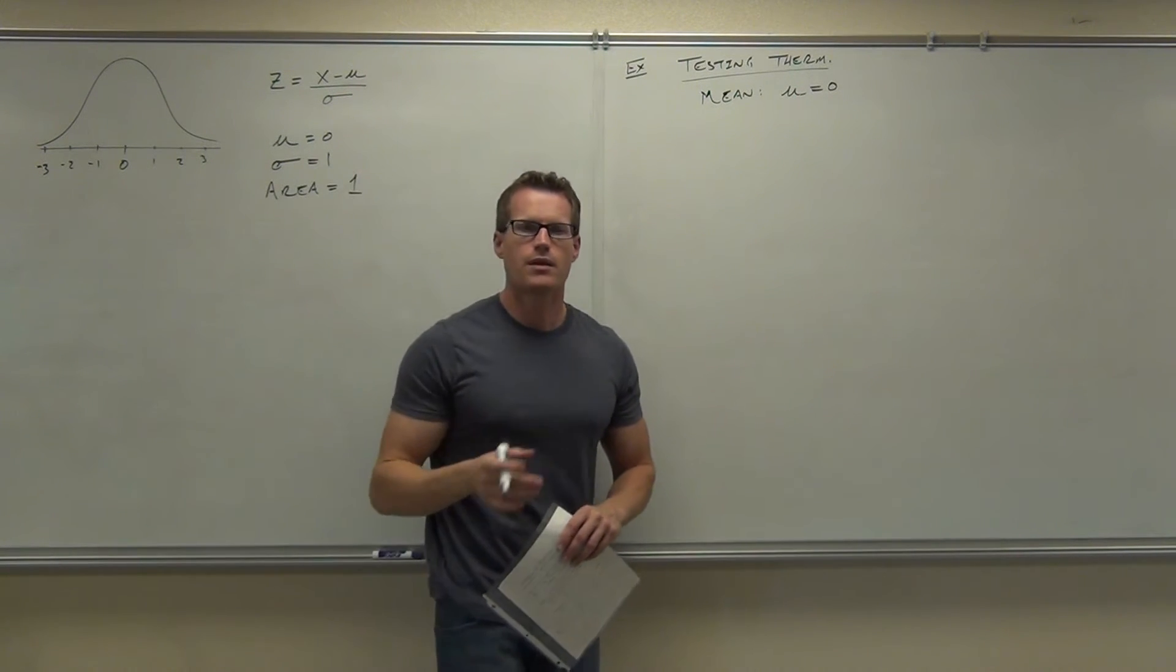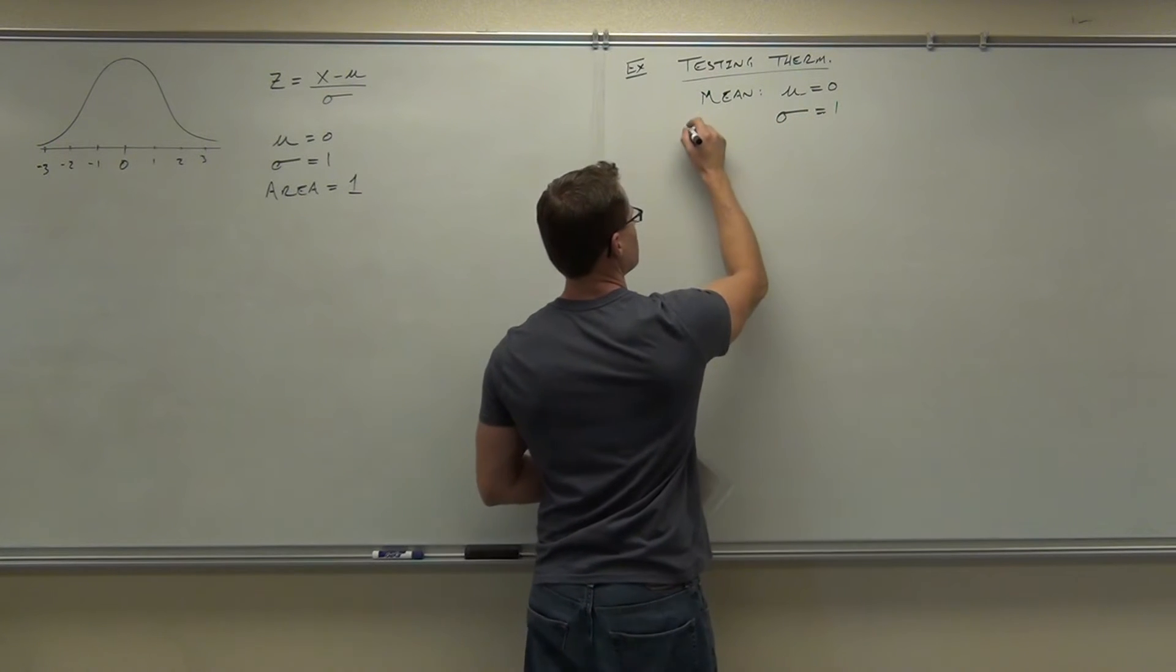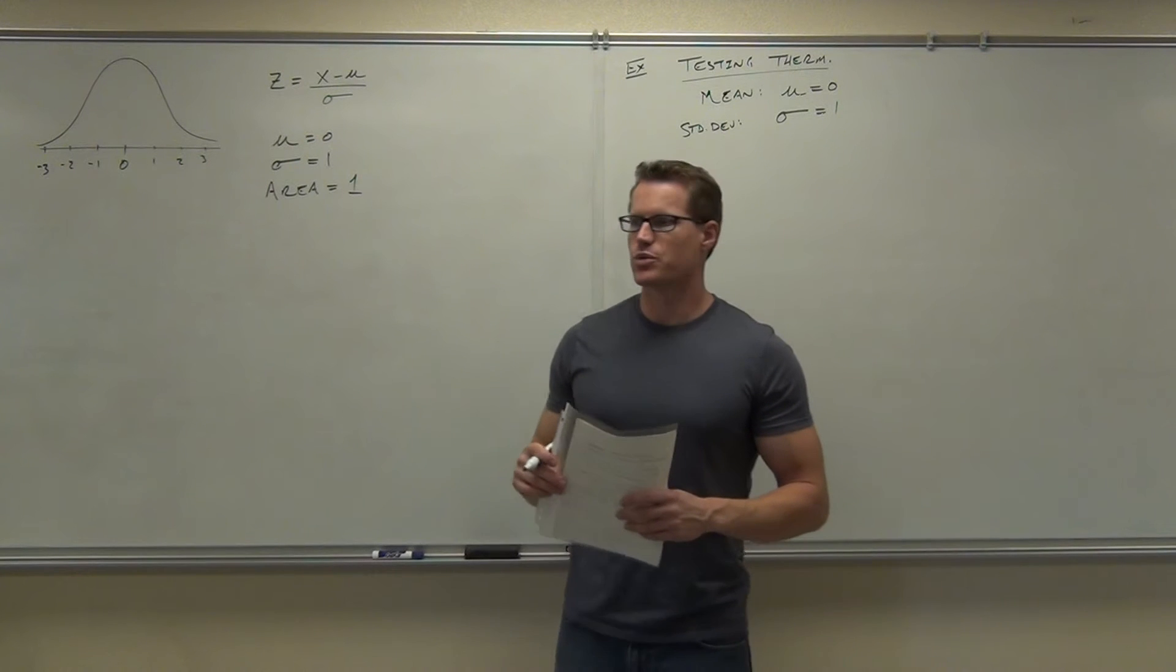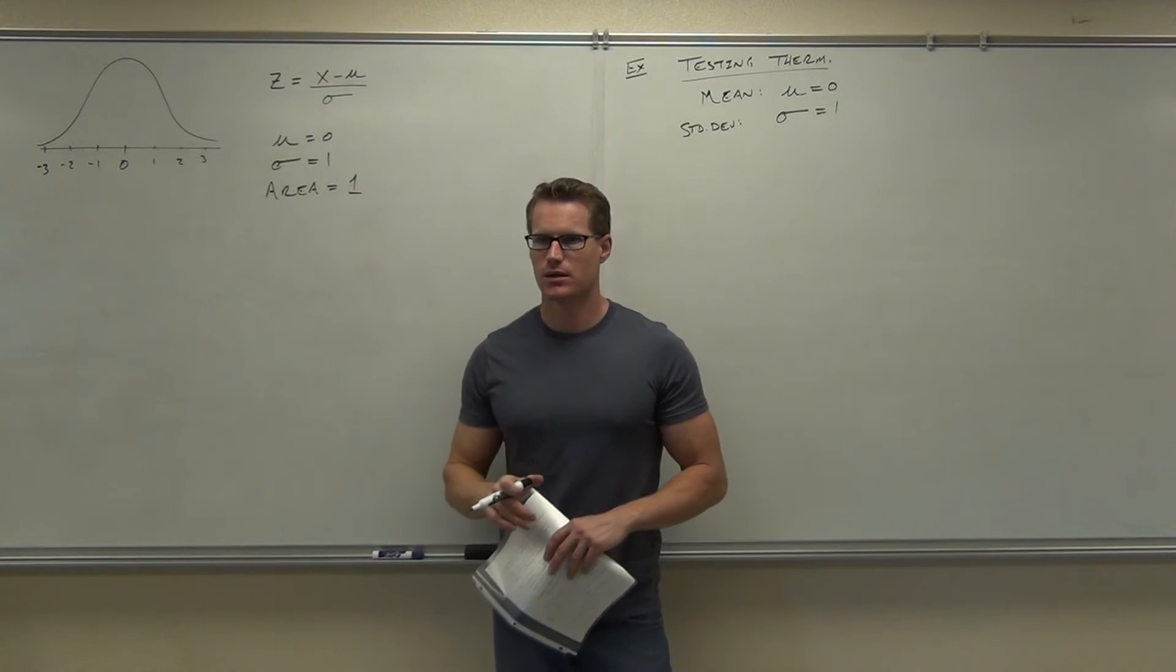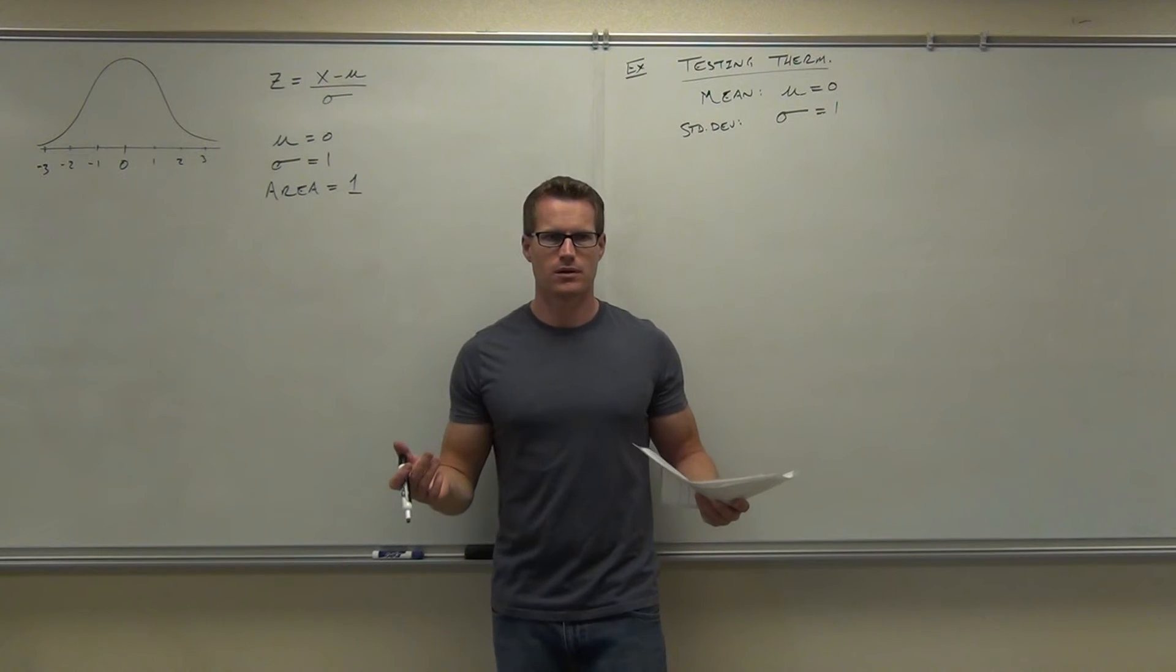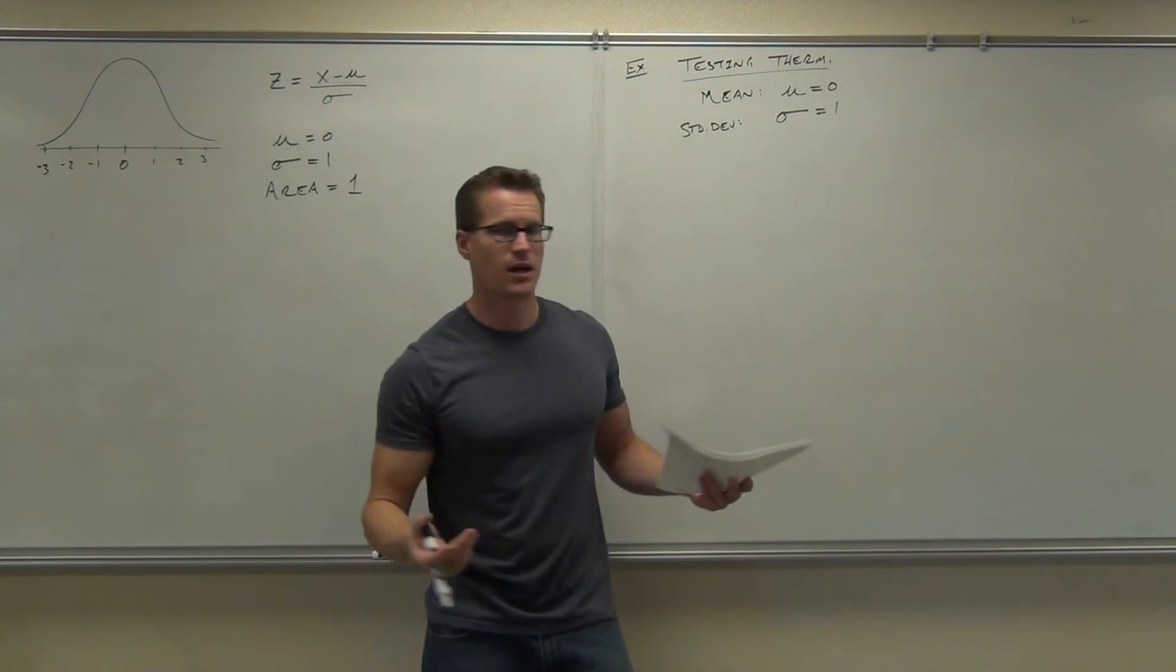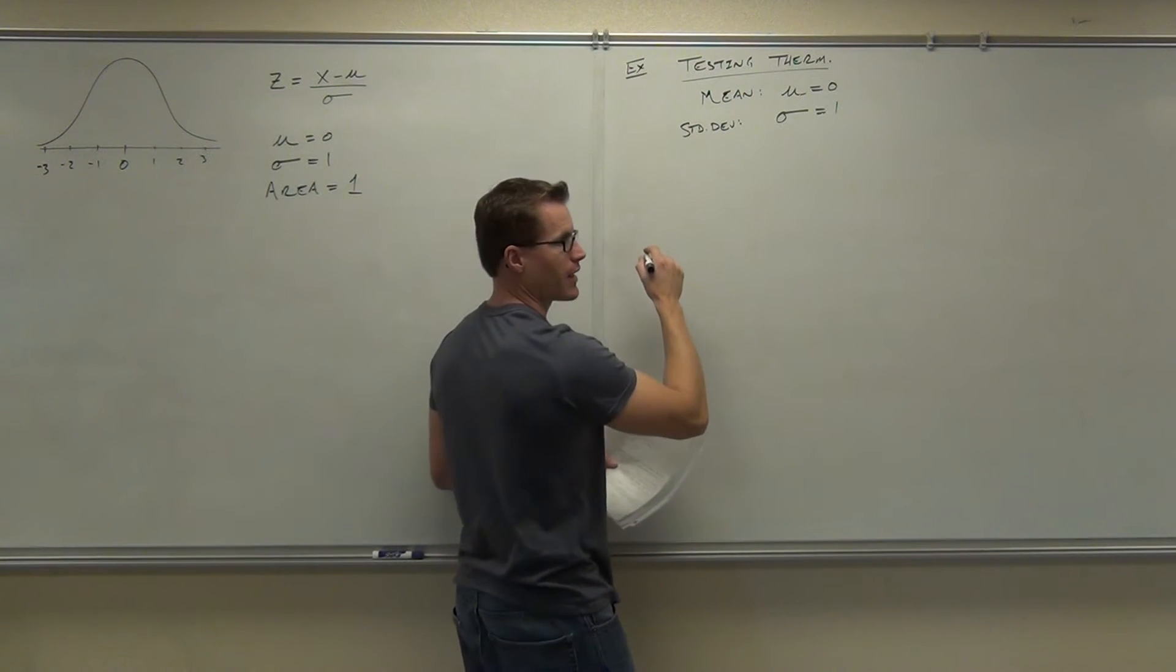And just to make things easy for right now, their standard deviation was one. One more important piece of information: the readings were normally distributed. Is that important for us? Why is it an important piece of information? What type of distribution are we working with? A normal distribution. If it's not normal, does that work? No. If you don't have a normally distributed data, this doesn't work because this is only for normally distributed data. So this had a mean of zero, standard deviation of one, and the readings were normally distributed.